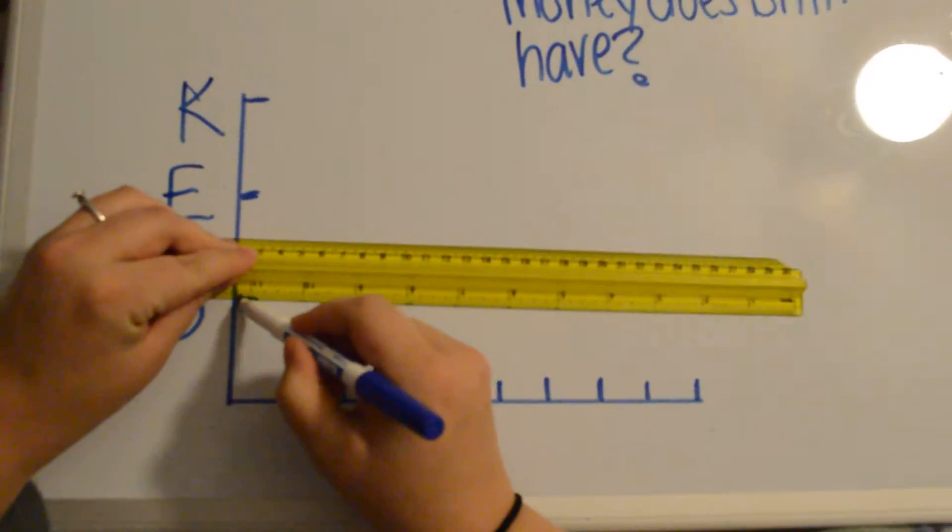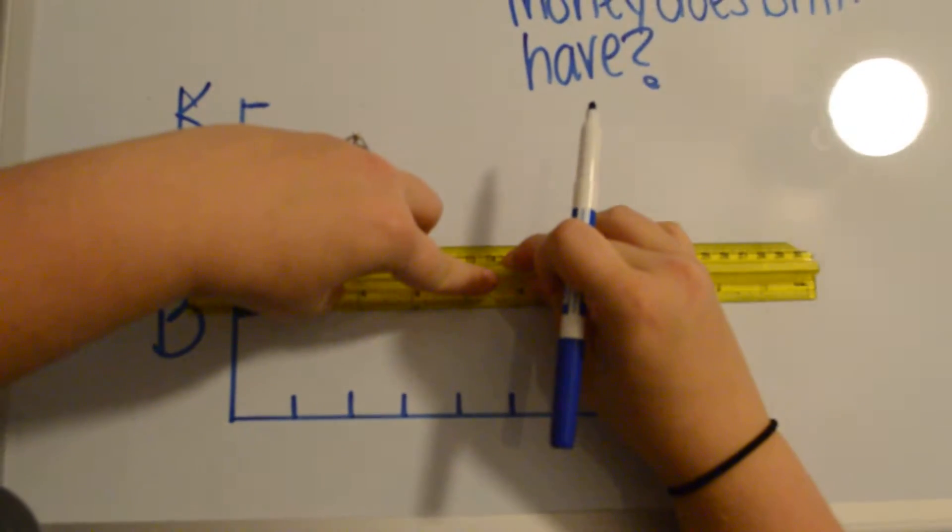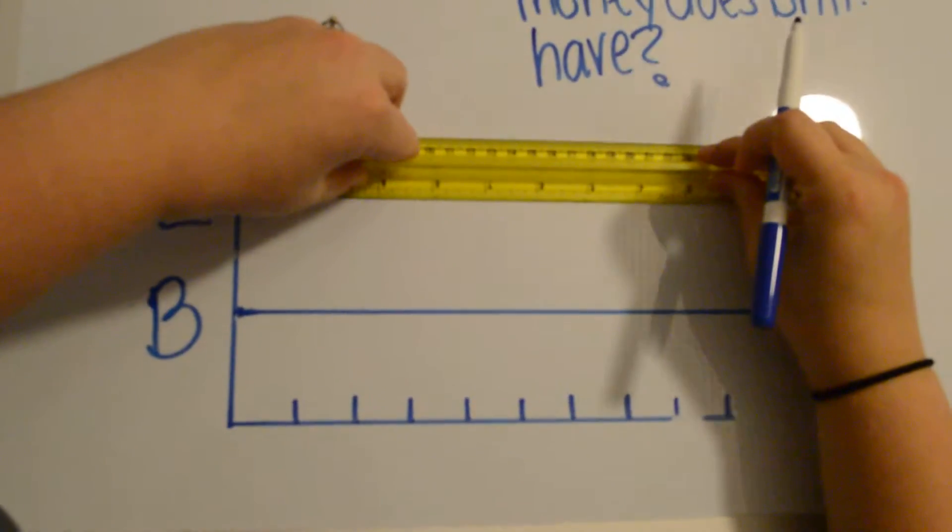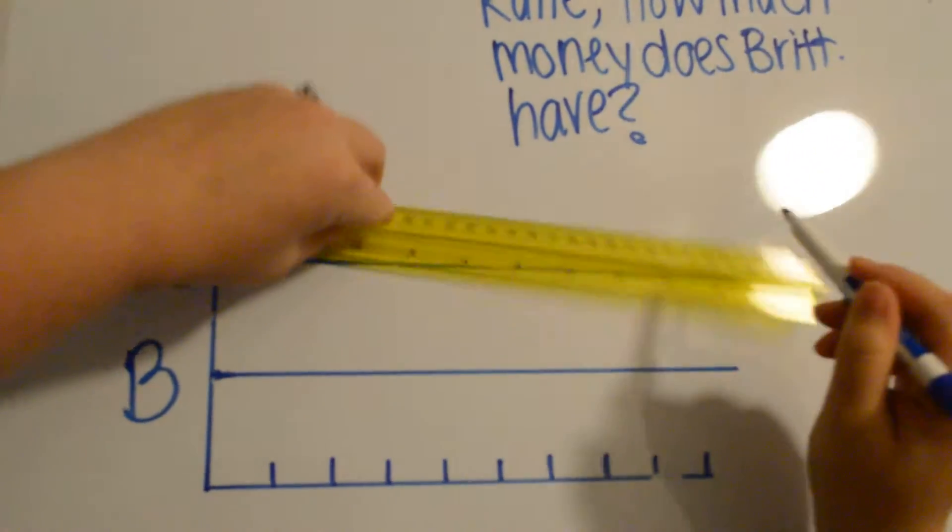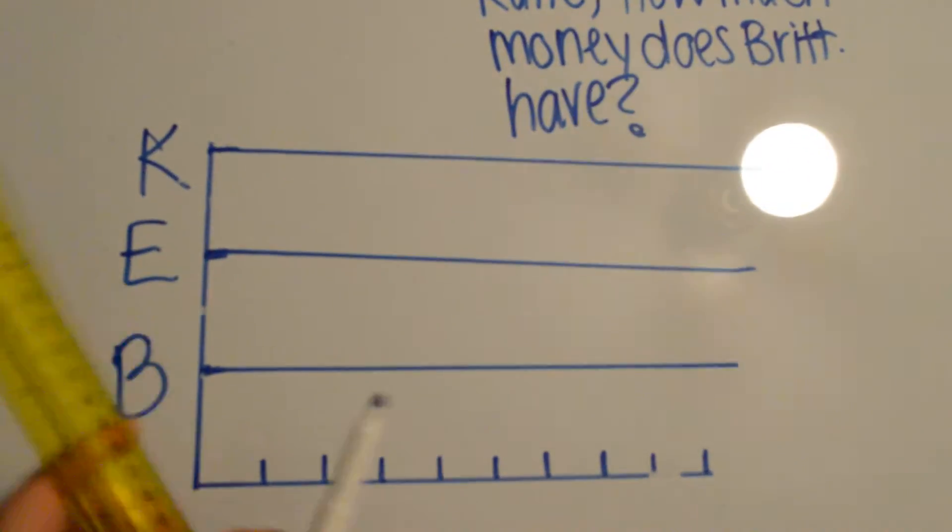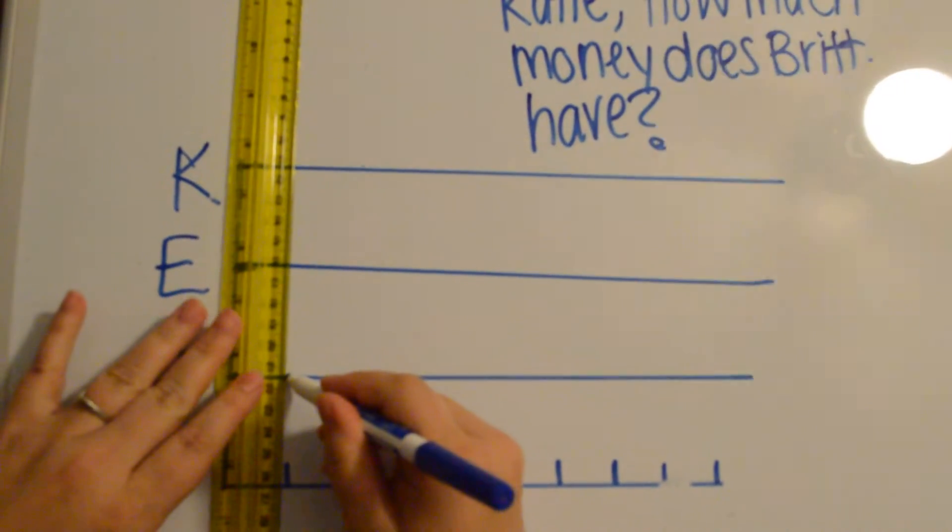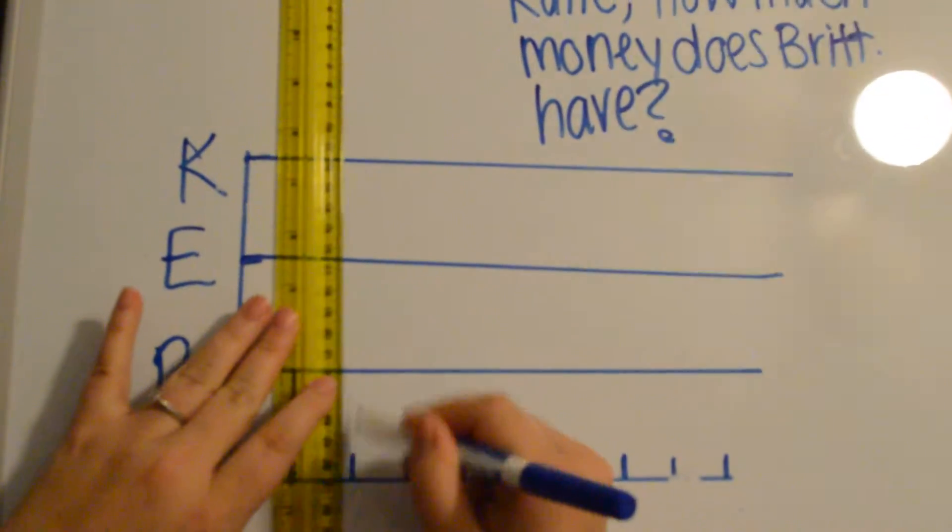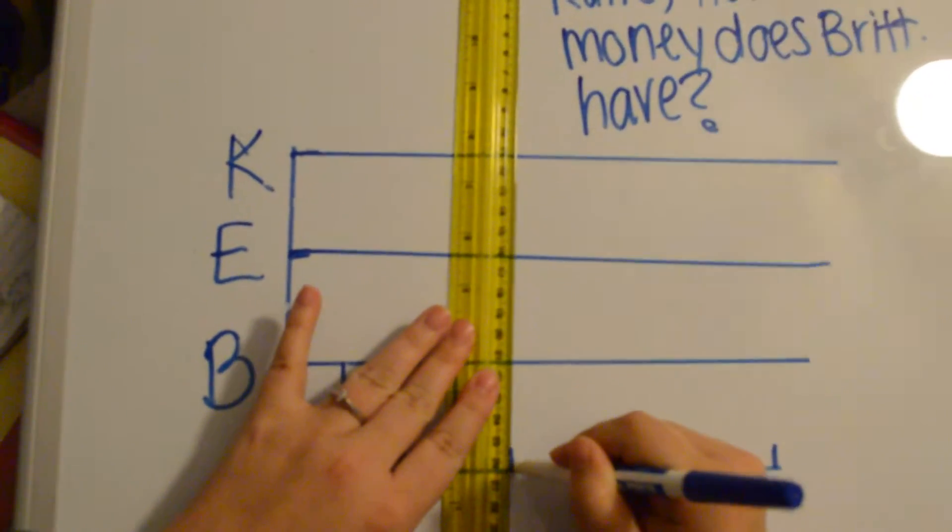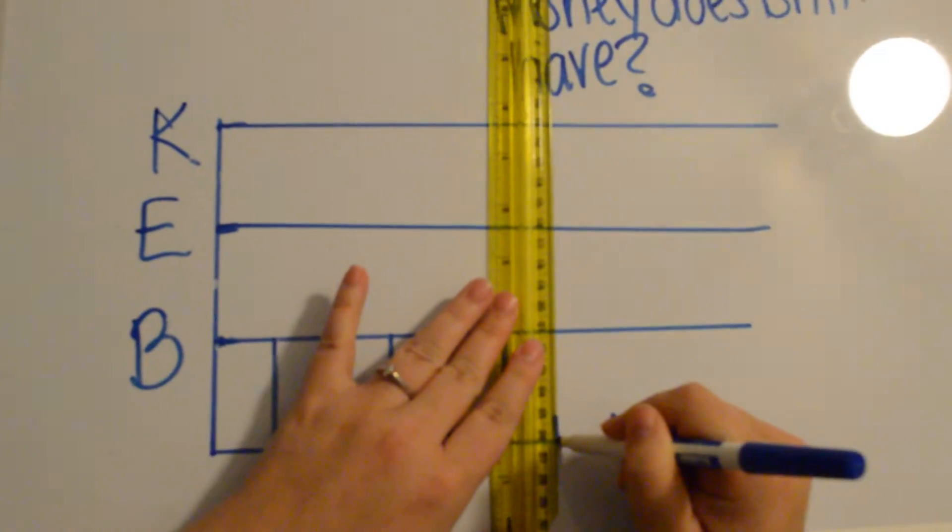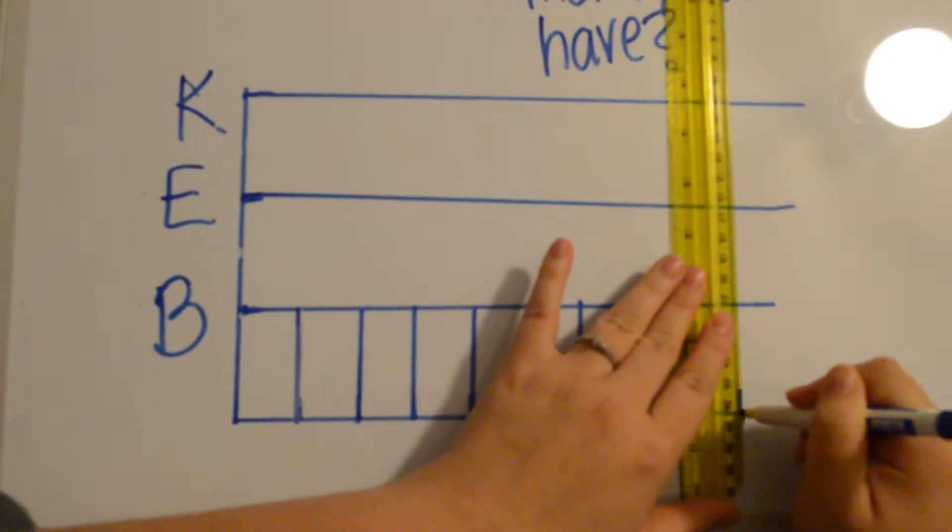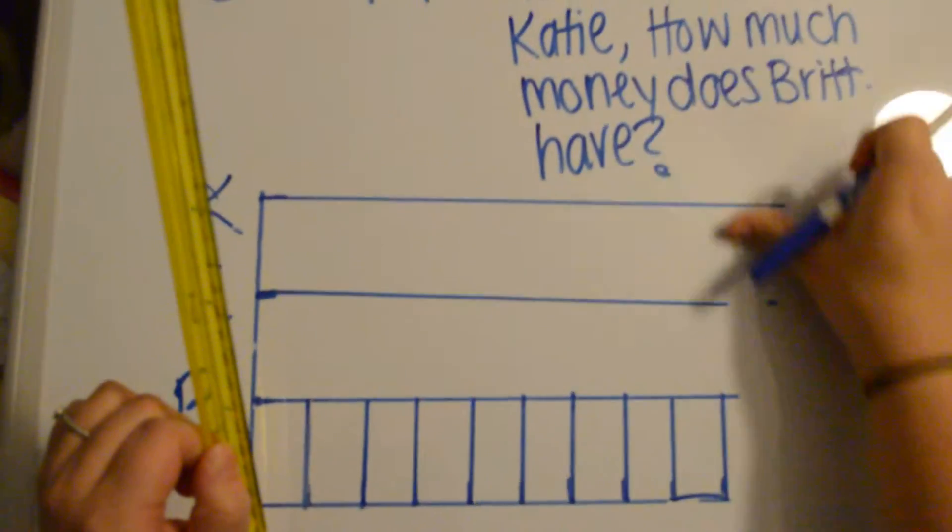So we're going to go across all of these to draw our tape diagram. Brittany has 9, so we're going to draw in her 9 blocks: 1, 2, 3, 4, 5, 6, 7, 8, 9.